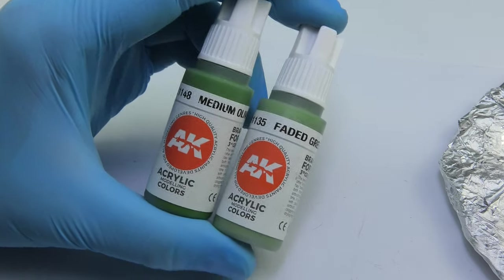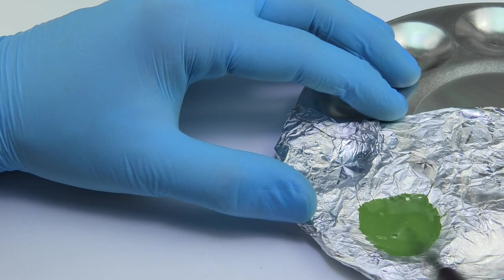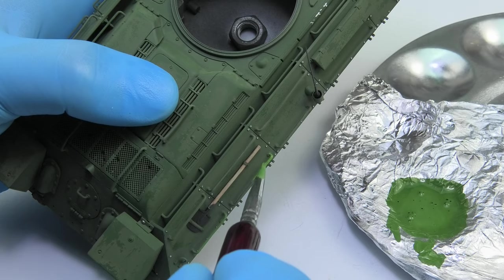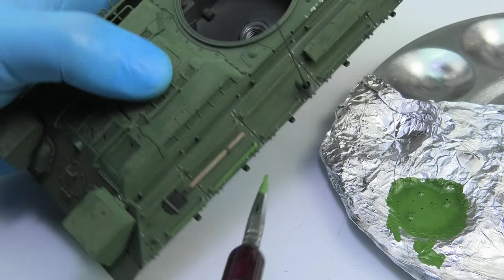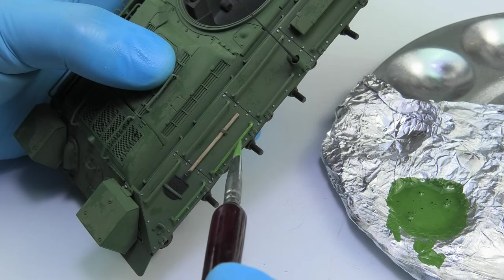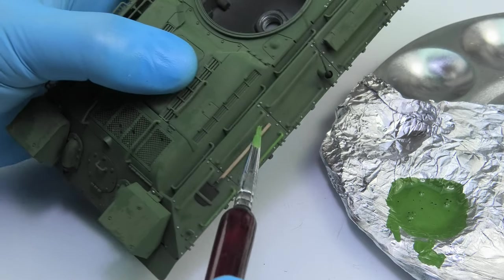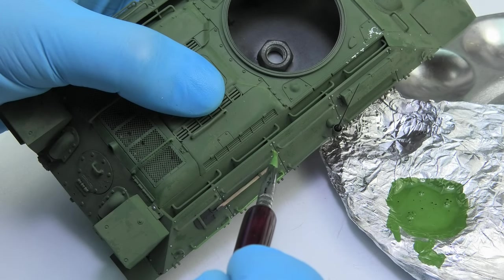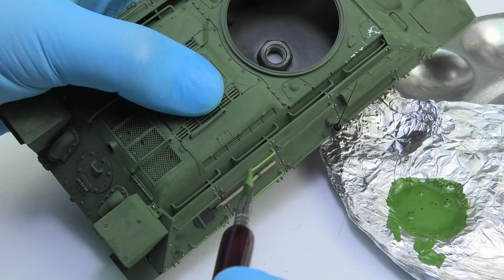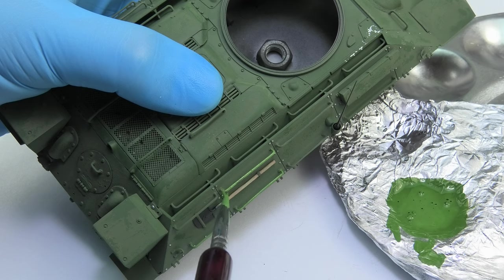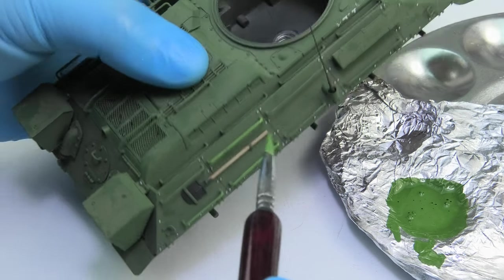Ok, in the end a bit of modulation. I mixed medium olive and faded green with each other more or less evenly and painted all the handles and small parts to make them brighter. Now I guess I could have used an even lighter color as the weathering toned it down and the effect was almost gone.